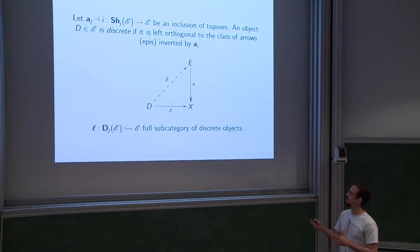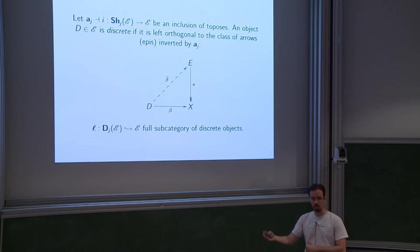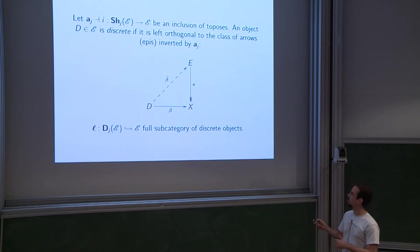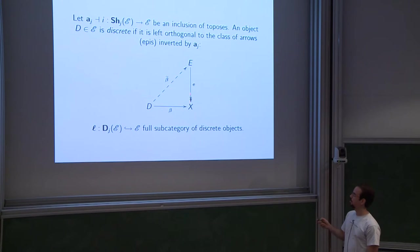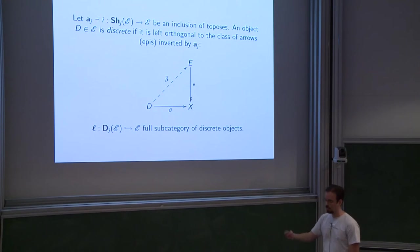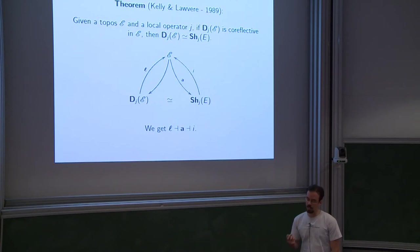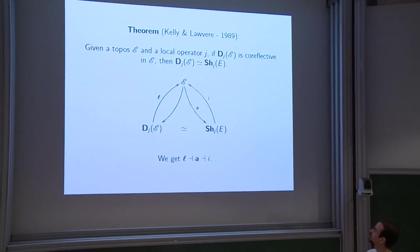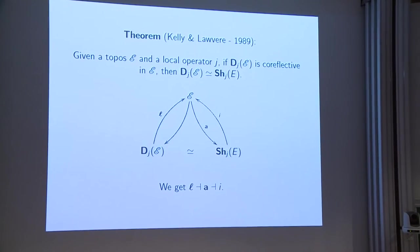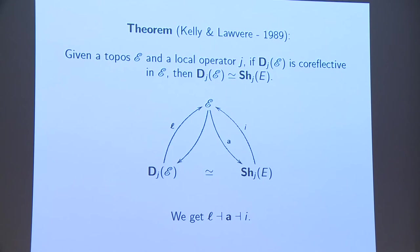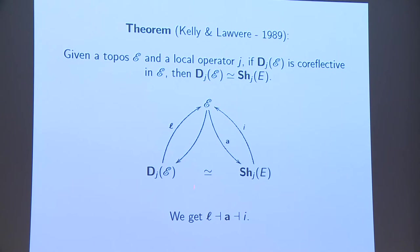It's so dual that you can just take epis here, whereas for a sheaf it's only necessary to take monos. But it works for any morphism inverted by the associated sheaf functor. If you remember the diagram for the sheaf condition, this is exactly the dual thing, and you get a full subcategory of discrete objects. Now there's a theorem by Kelly and Lawvere that if the category of discrete objects is co-reflective, then it's equivalent to the category of sheaves — you get a totally symmetrical situation where the co-reflective arrow joins with the reflector, giving your triple adjoints.